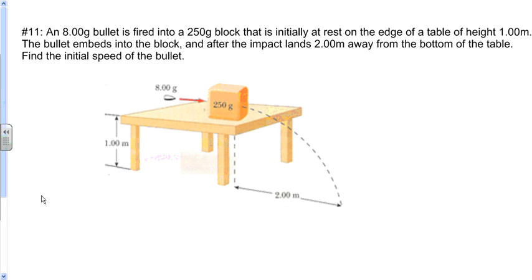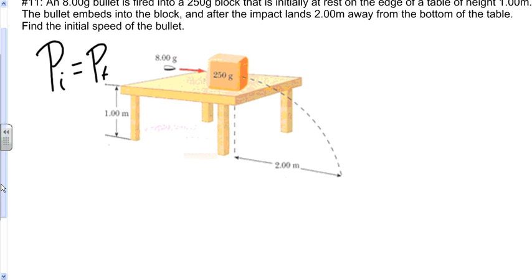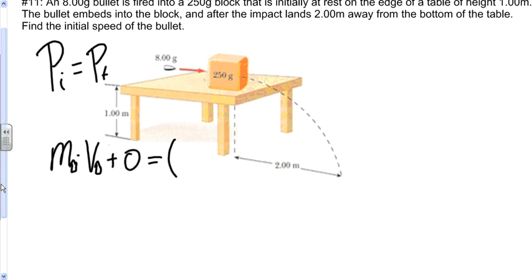In this problem, we're going to start with a basic conservation of momentum equation — p initial equals p final — and analyze the momentum before and after the collision. Since the block is at rest at the beginning, momentum before the collision is the mass of the bullet times the velocity of the bullet, plus zero. Since the bullet and block stick together, we add the masses: mass of the bullet plus mass of the block, times their shared velocity after the collision.